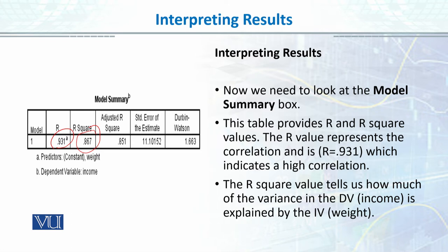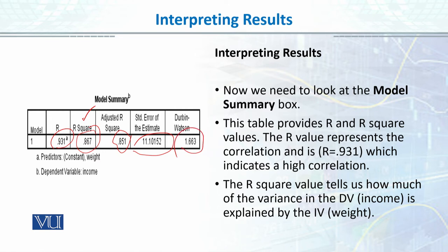Adjusted R-square changes when we add more variables, but you should focus on the R-square value. The correlation is 0.93 and R-square tells us how much variance is explained — you can see it is a high value. You can also see the standard error. The Durbin-Watson value should be around 2. If it is 1 or 3, there is a problem. It is very close to 2, which means there is no autocorrelation problem.